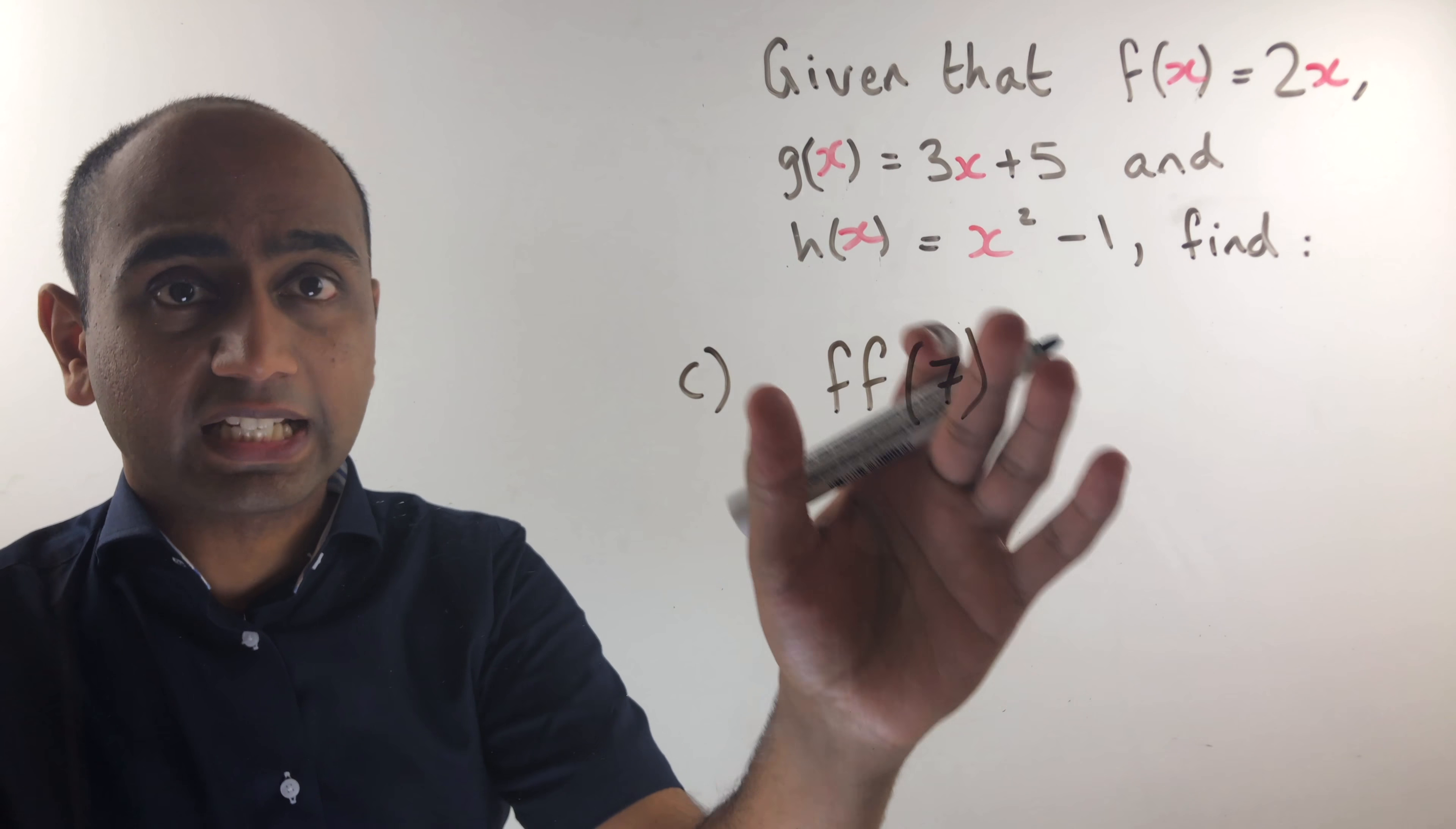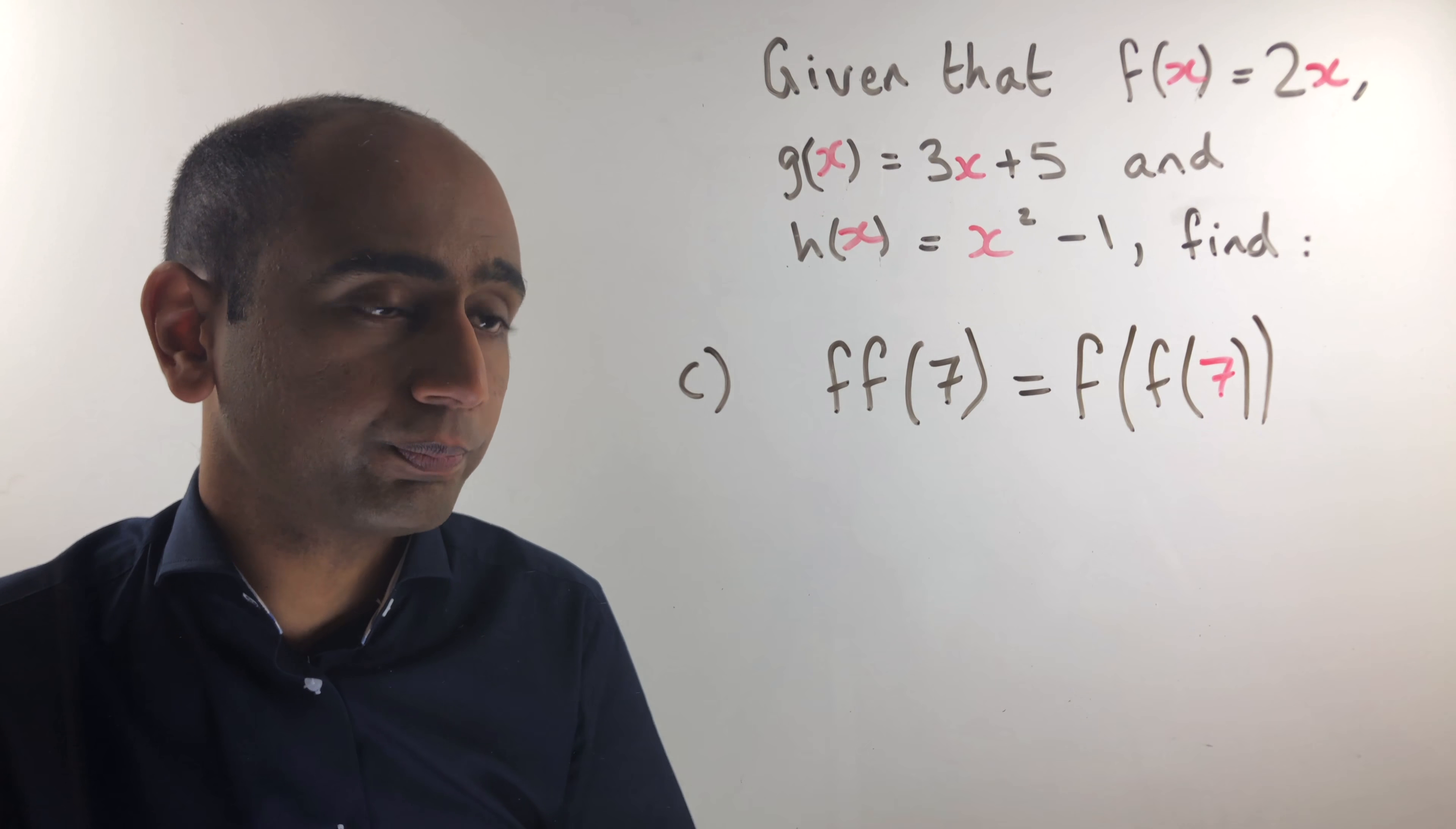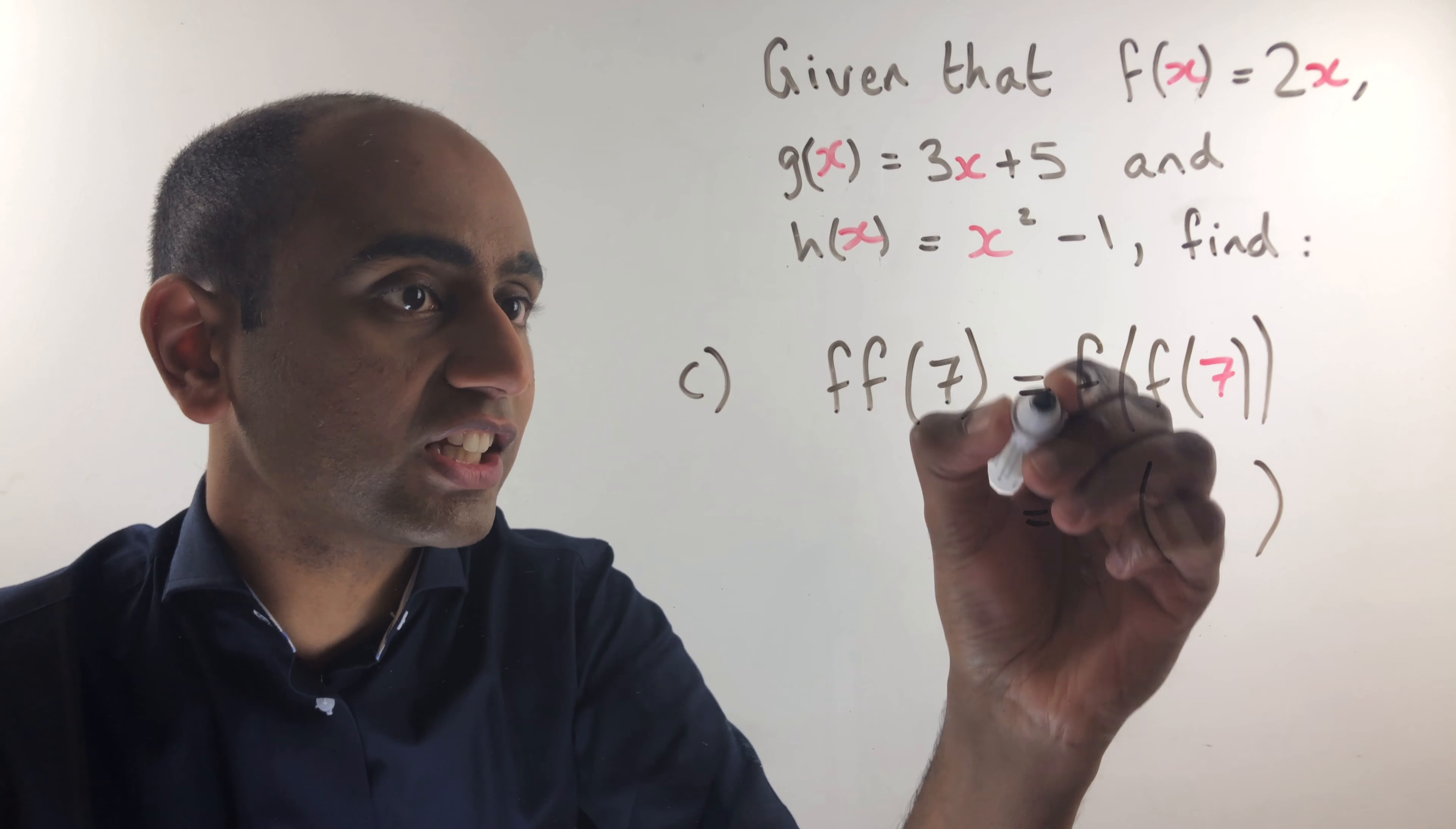Pause the video and have a go at part c for yourself. Here's the answer. ff of 7 is simply going to be f of f of 7. So the first thing I'm going to do is input 7 into the function f and if I do that I'm going to get 2 lots of 7. Remember f of x is 2 lots of x so f of 7 is 2 lots of 7. So f of 7 in here would be 14 and that's what we're going to input into this function f on the furthest to the left.